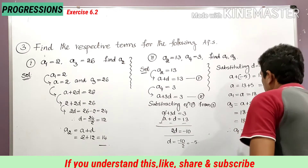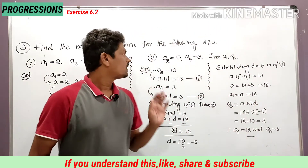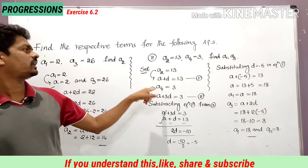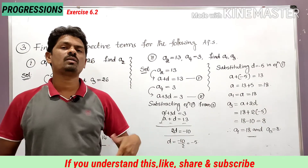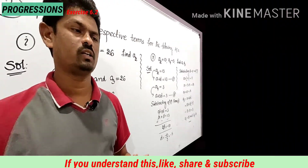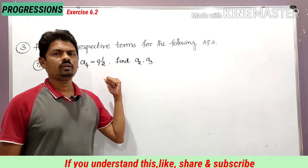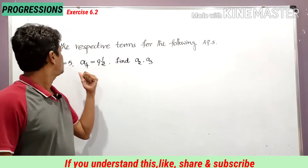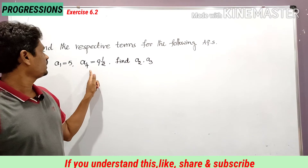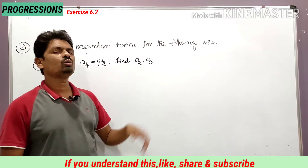Those are the two bits of the third problem. Next, the third bit: a1 is equal to 5, a4 is equal to 9 and a half. Find a2 and a3. He has given a1 and a4, and is asking us to find a2 and a3.